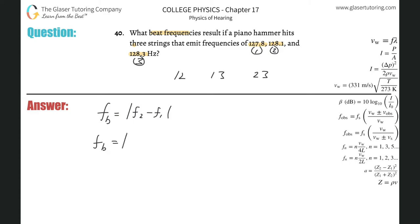So we're going to find it between 128.1 minus 127.8, and that beat frequency there should be 0.3, and these are in terms of hertz. So that's one.